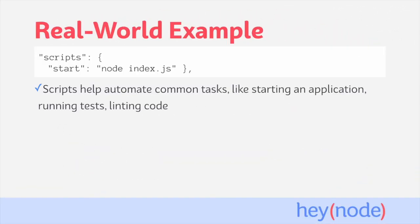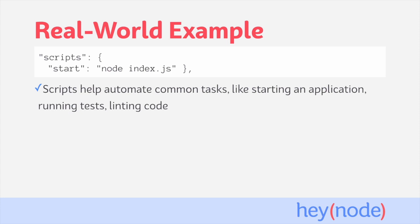Scripts are helpful in automating common tasks that we use in our project, like starting an application, running tests, linting code, and all kinds of other things. Scripts are registered in the scripts field of your package.json as key-value pairs, where the key is the name of the script and the value is the terminal commands which make up the script.